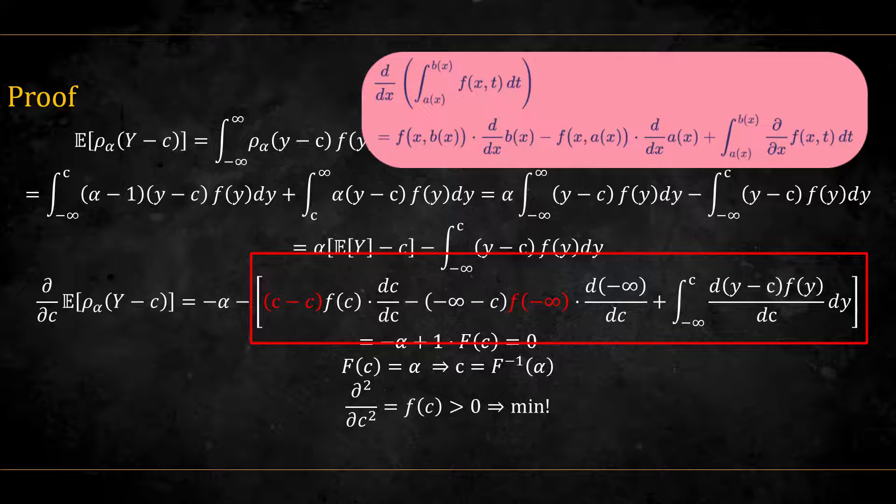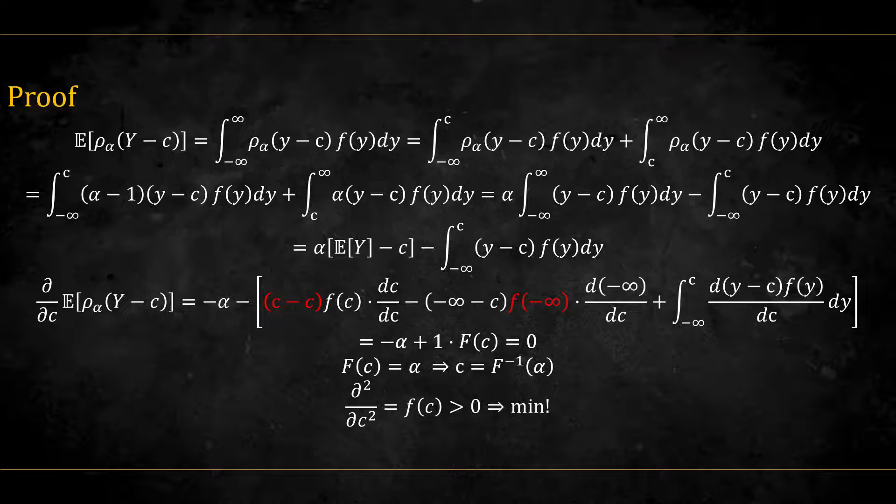Note that technically the infinity signs should be replaced with the limits as the value goes to infinity, but we'll ignore that for ease of notation. The first two parts of Leibniz rule cancel out because they are equal to zero, and we are left with the third part. The derivative of minus c is minus 1, and both minuses become a plus. We are left with this.